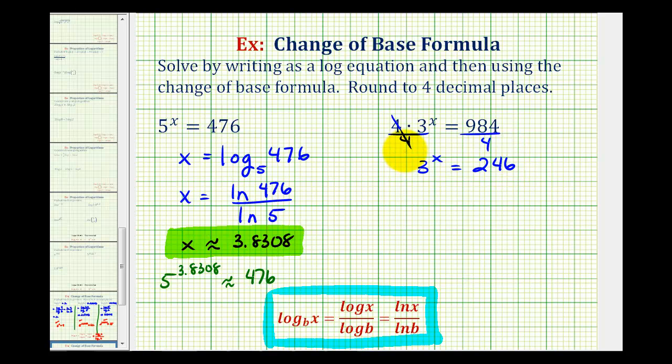Now it's just like our first example. From here we'll write a log equation. The base is 3. A logarithm is an exponent, so the log is going to equal our exponent x, and our number is 246.